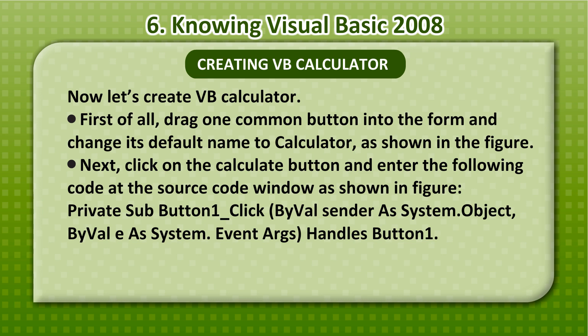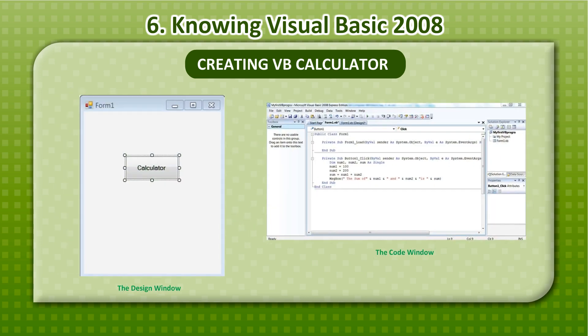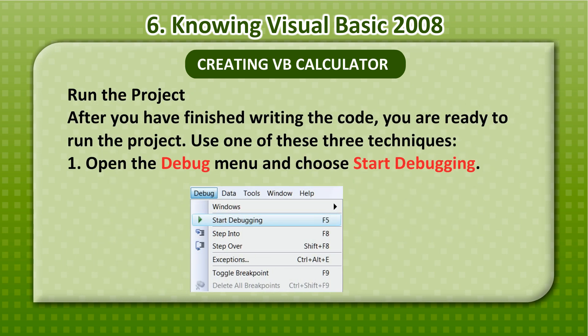Private Sub Button1_Click(ByVal sender As System.Object, ByVal e As System.EventArgs) Handles Button1.Click — Dim num1, num2, sum As Single — num1 = 100 — num2 = 200 — sum = num1 + num2 — MsgBox("The sum of " & num1 & " and " & num2 & " is " & sum) — End Sub. After you have finished writing the code, you are ready to run the project.